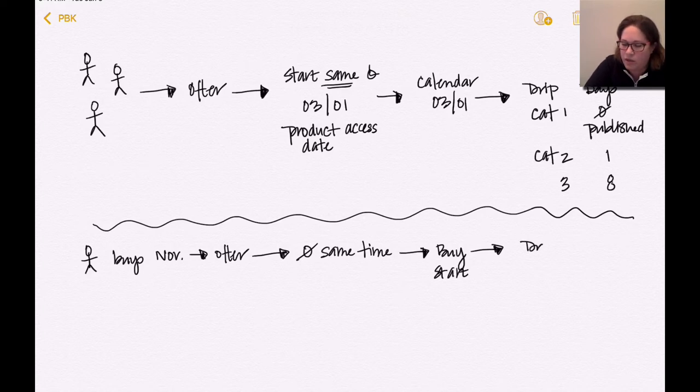So here, the drip, okay, and the days, same thing. So category one is set it is zero, meaning we want them to get it right away. So that is actually a published category.